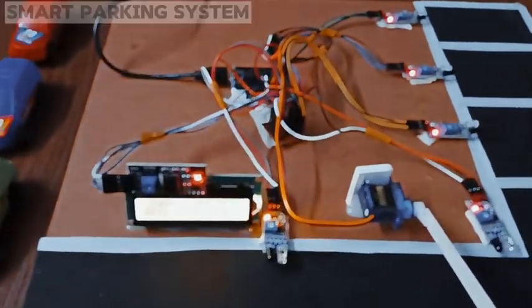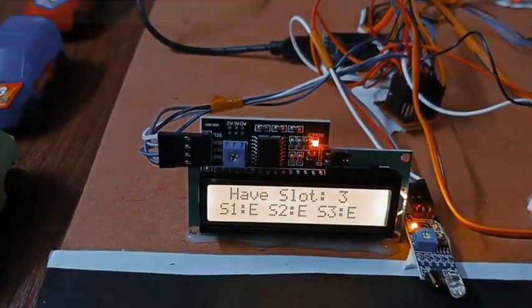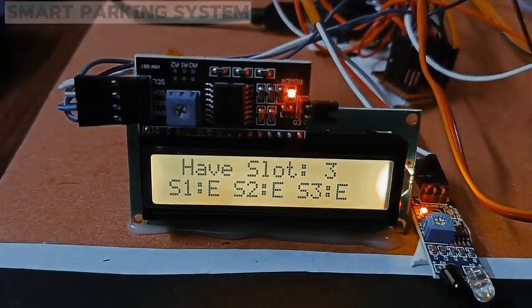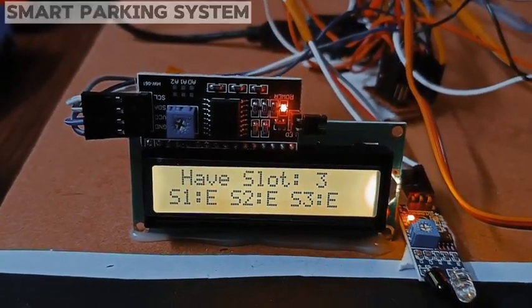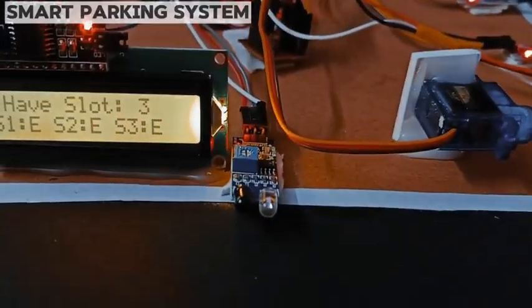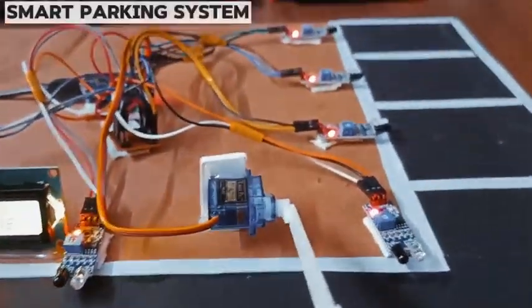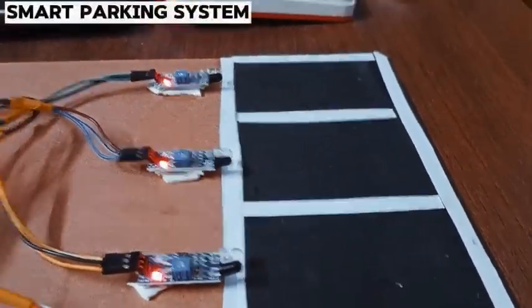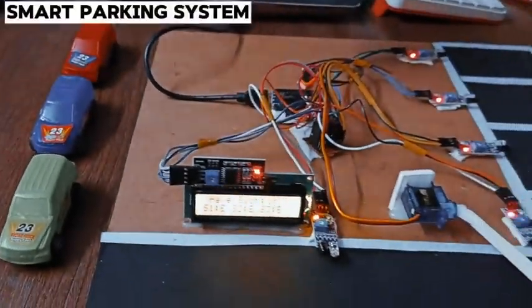Parking slot system. Here it is, LCD, three parking slots we have: S1, S2, S3. E means empty, F means full. It is entry, exit. This is a gate, entry, three parking spaces. These are the cars we have.